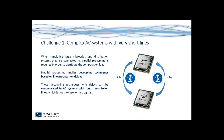The first challenge related to power systems is the fact that there are complex AC systems with very short lines that need to be simulated in real-time. When simulating large microgrids and the distribution systems they are connected to, parallel processing is required to distribute the computation load. Parallel processing necessarily implies using various decoupling techniques based on line propagation delays, and these delays can be compensated in AC systems with long transmission lines — but long transmission lines are typically not available in microgrids.